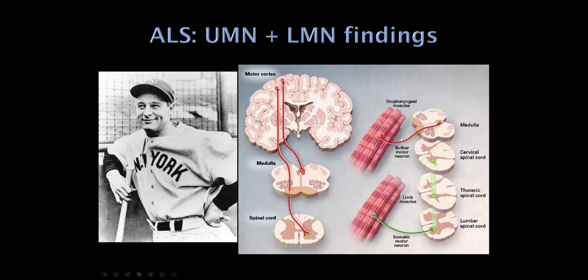Here's the hypoglossal nucleus going out to the tongue. The reason weakness is so rapidly progressive in ALS is that it's a double hit on the motor neurons - upper and lower. Patients now present with a mixture of upper and lower motor neuron findings. Many patients will know this as Lou Gehrig's disease - this appears to be Lou Gehrig's last photo as a member of the New York Yankees.